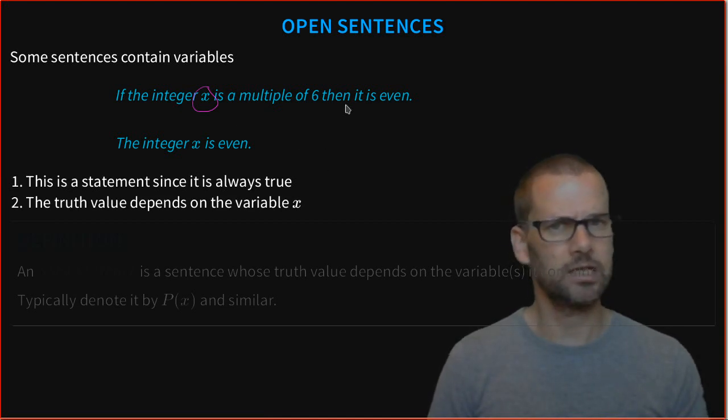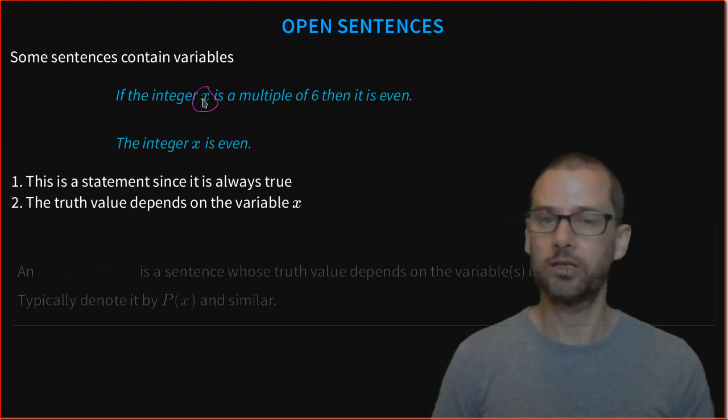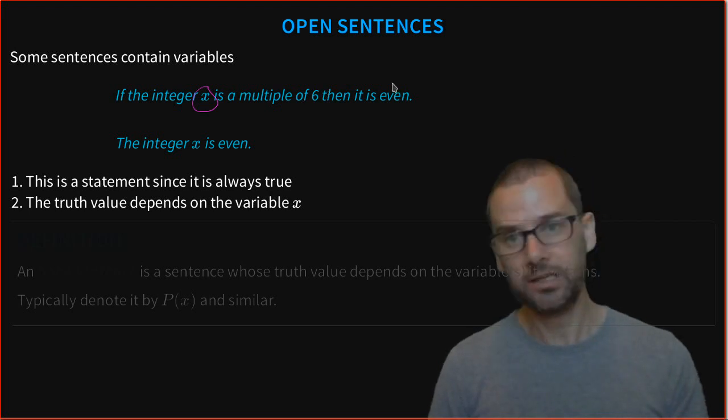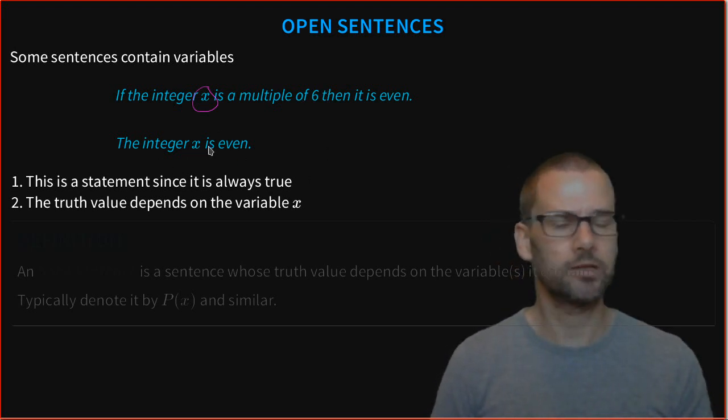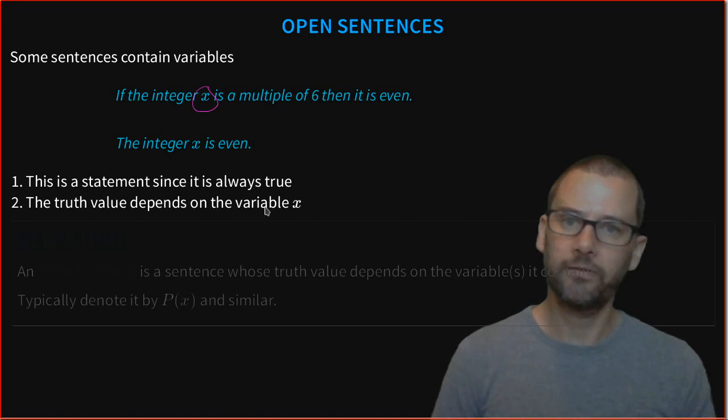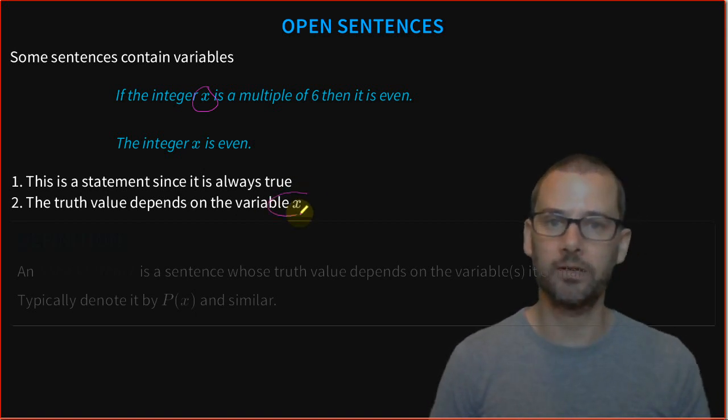Let's look at these things. It actually turns out that this first one is actually true. If we take an integer that is a multiple of 6, then it is even. This is a true statement, so it is actually a statement. On the other hand, the second one, it depends on x still. If x is 5, it's false. If x is 6, it's true.